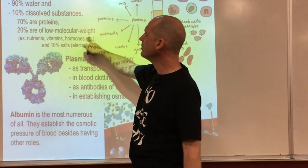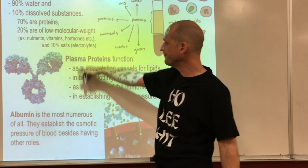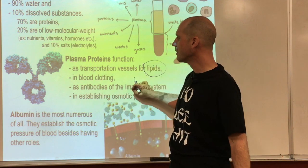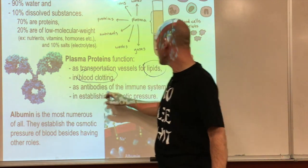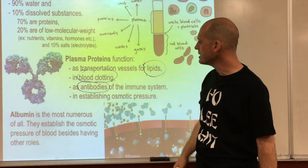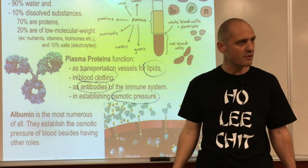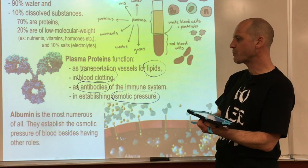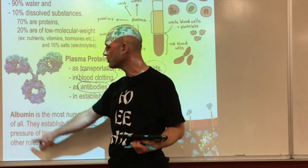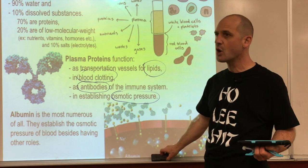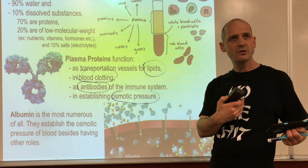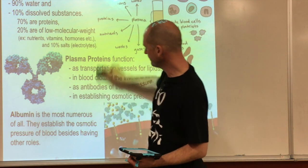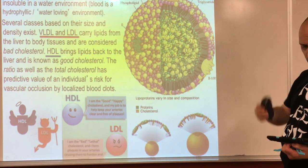Most of plasma is water - about 90%. The remaining 10% is dissolved substances: about 70% of that 10% is proteins, and the rest is nutrients, vitamins, hormones, and electrolytes. Plasma proteins function in transportation of lipids, blood clotting, and antibodies for the immune system. Albumin is the most numerous plasma protein - it establishes osmotic pressure for blood.